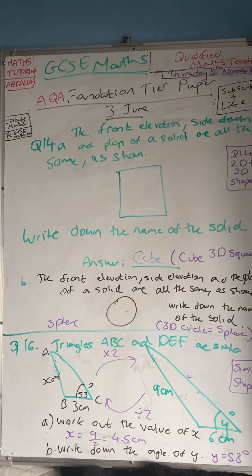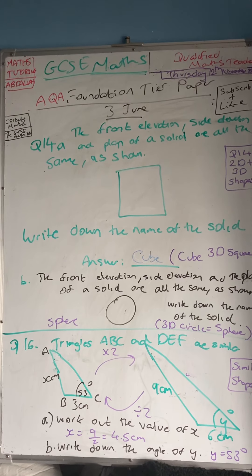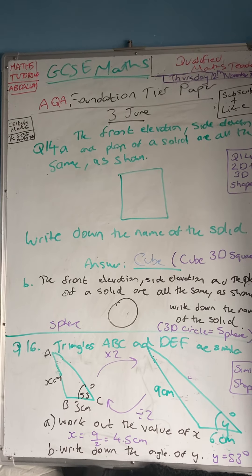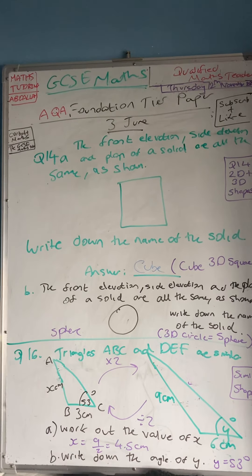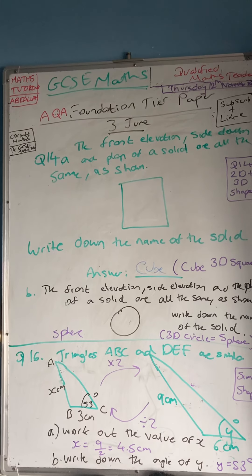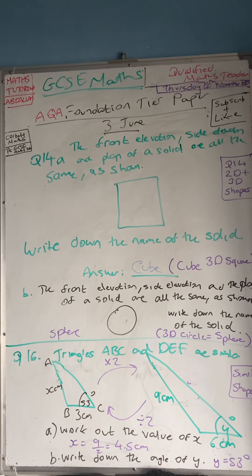Question 14 says the front elevation, side elevation and plan of a solid are all the same as shown. So it's a square. Write down the name of the solid, so it's a cube. A 3D square is called a cube.